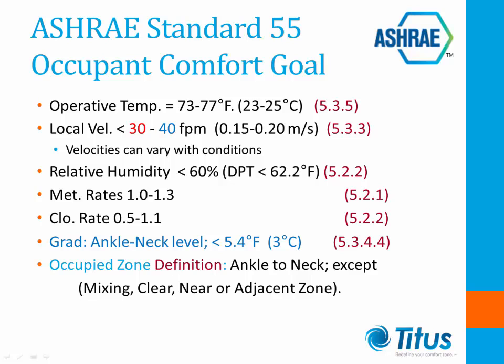There are five elements defined in Standard 55 relative to occupant comfort. The operative temperature, similar to ambient temperature — the ideal operative temperature is where the occupant does not sense any heat gain or heat loss to their surroundings. The old rule of thumb was to design to 75 degrees plus or minus 2 degrees. Local velocity, typically less than 40 feet per minute for cooling and less than 30 feet per minute for heating when the space temperature is less than 72 degrees. Velocity can increase with temperature and we will look at that a little bit later on.